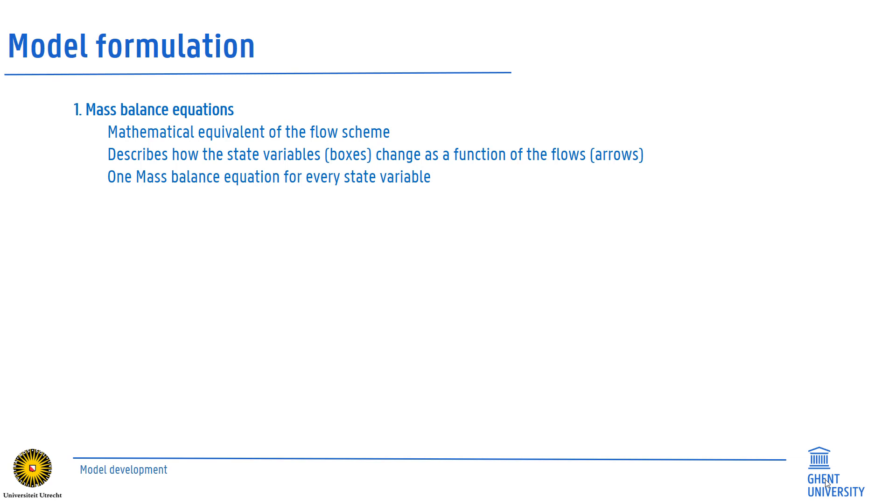This is accomplished by first translating the flow scheme into mass balance equations. Such equations show how the state variables, remember the boxes, quantitatively change as a function of all the flows that enter or leave this variable. We thus need to derive one mass balance equation for each state variable.